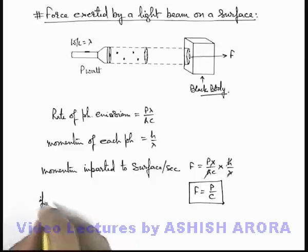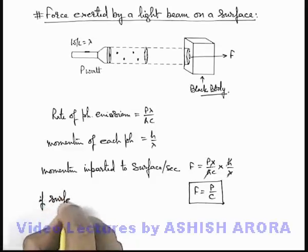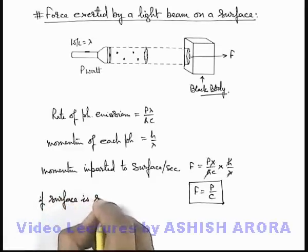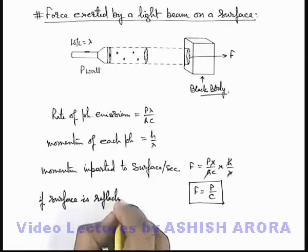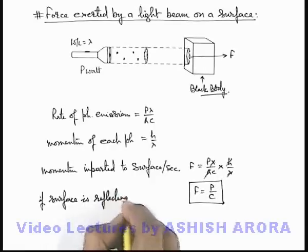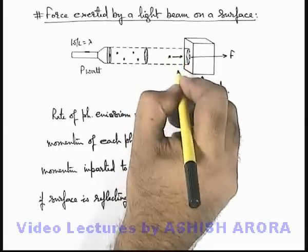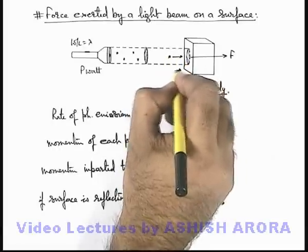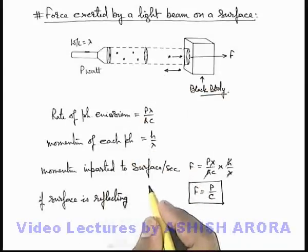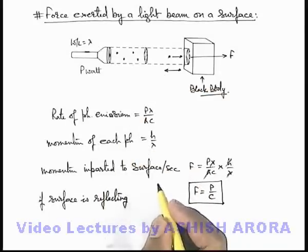And if sometimes we are given that a surface is reflecting, if it is considered to be perfectly reflecting, whichever photons are incident on it, in case of reflecting surface the same photon will be reflected in the opposite direction.